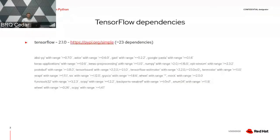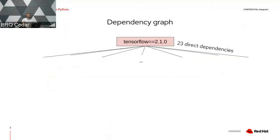You can also see some environment markers. That means that these dependencies can be installed conditionally, for example based on a Python interpreter version. So we have these 23 dependencies. Let's create a Dependency Graph. In this case we have just one direct dependency — TensorFlow in the specific version that we mentioned — and these 23 direct dependencies that we saw earlier.